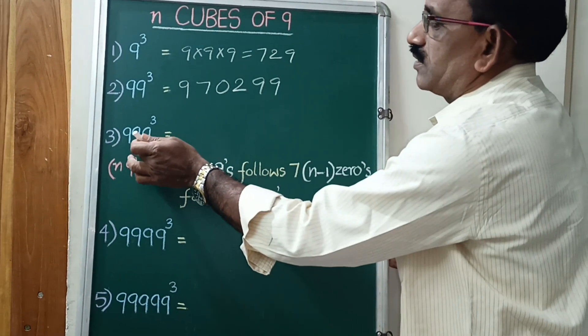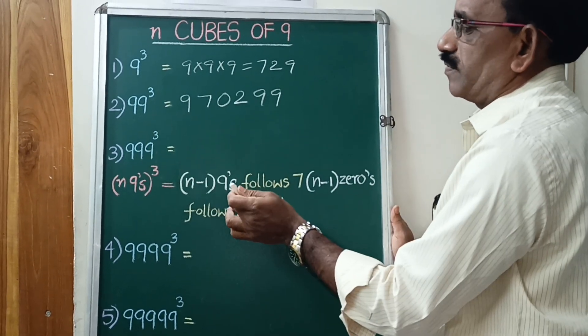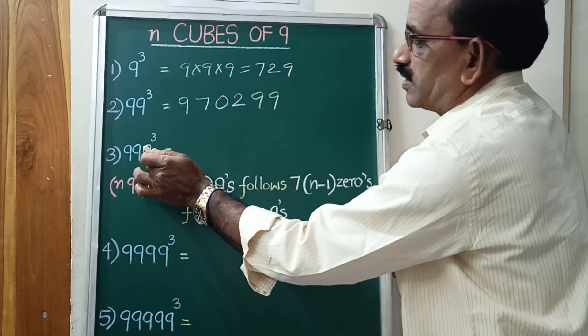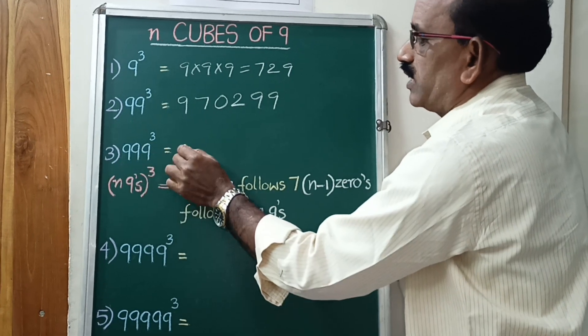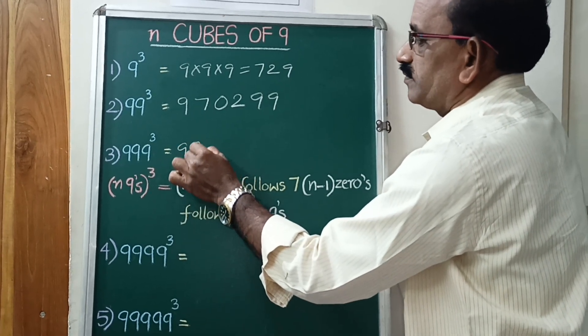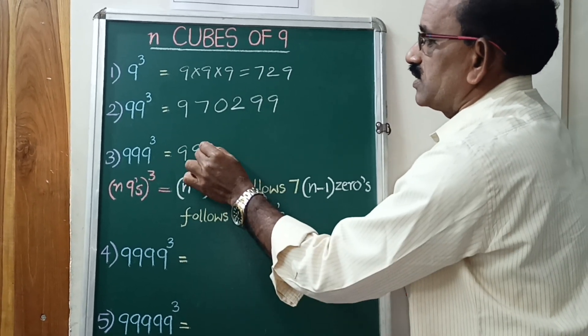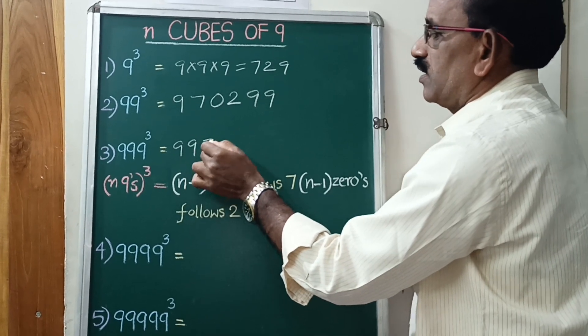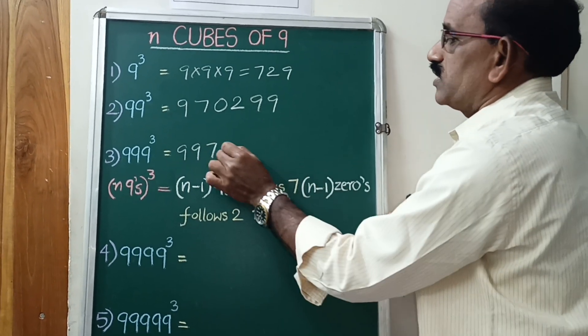That is the answer. 999 cube, N equal to 3. 2 9's, follows 7. Next, 2 0's.